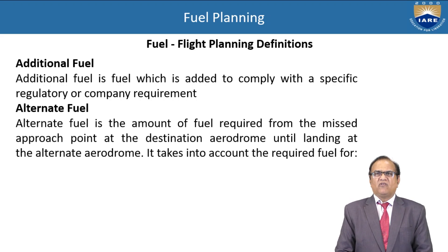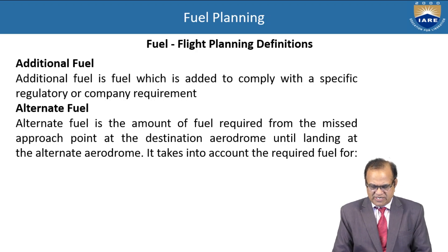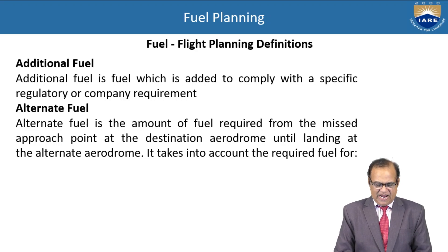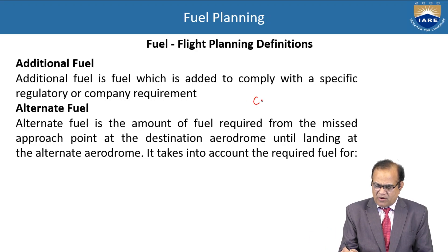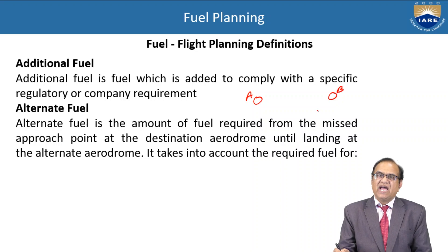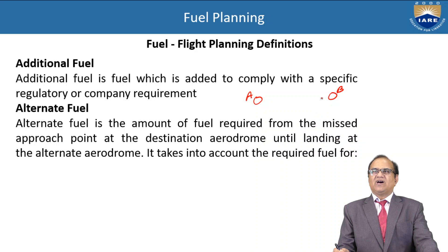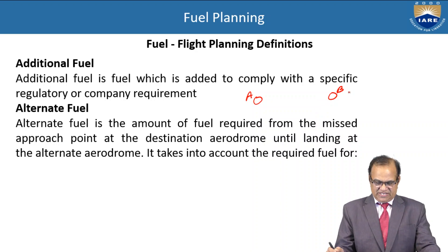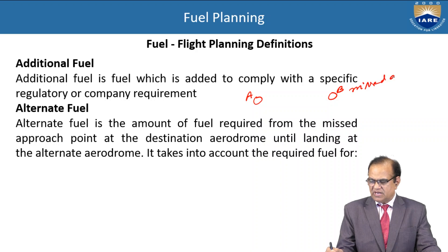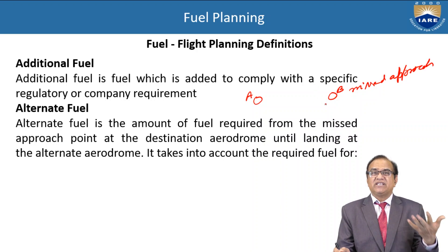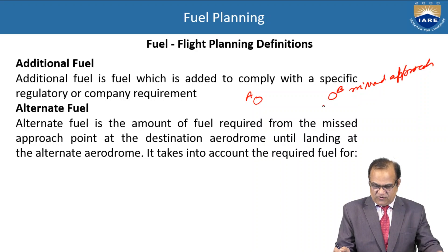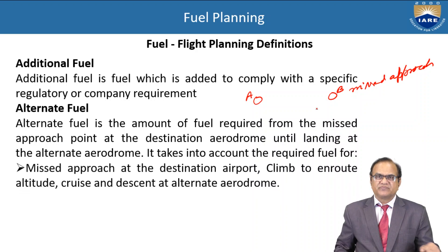Alternate fuel is the amount of fuel required from the missed approach point at the destination aerodrome until landing at the alternative aerodrome. It takes into account the required fuel. If you are planned from airport A to airport B, and at airport B during landing there is a missed approach, the aircraft has to go around and some additional fuel is required. That fuel is called the alternate fuel.